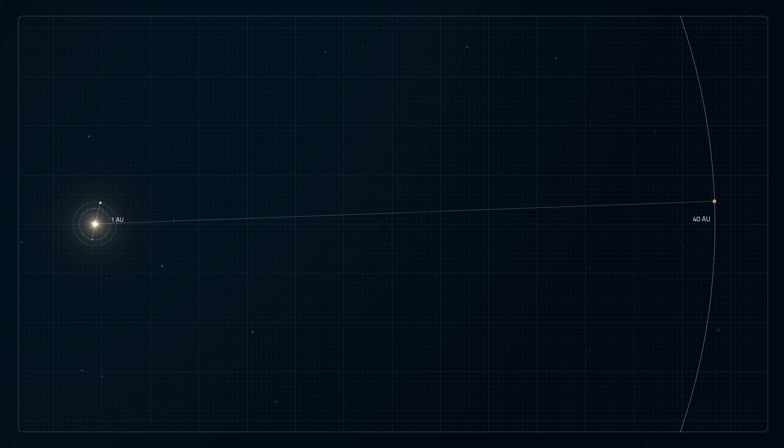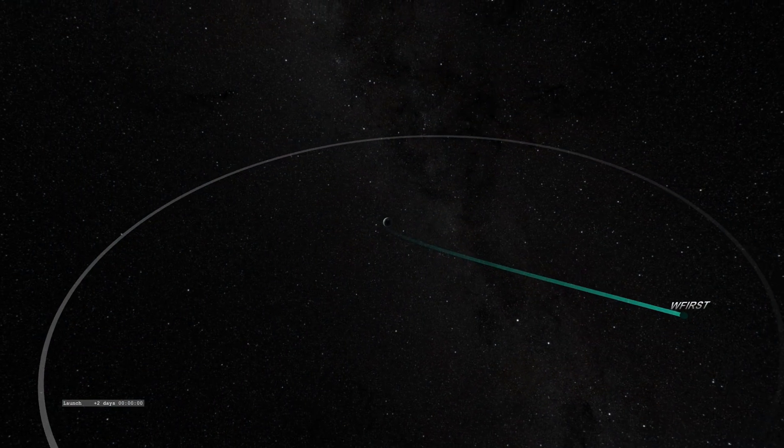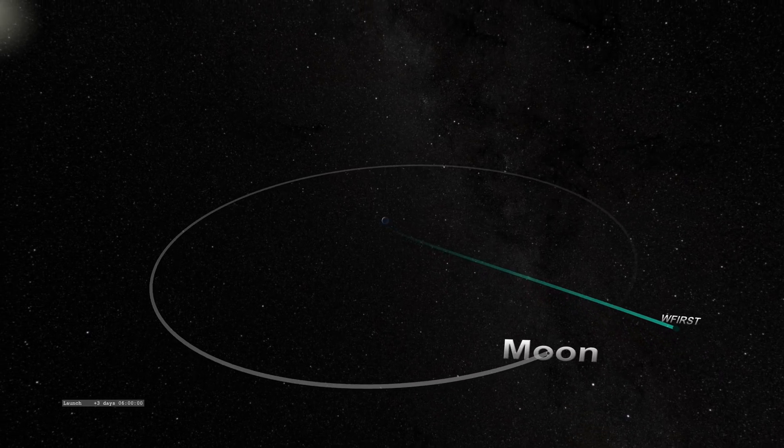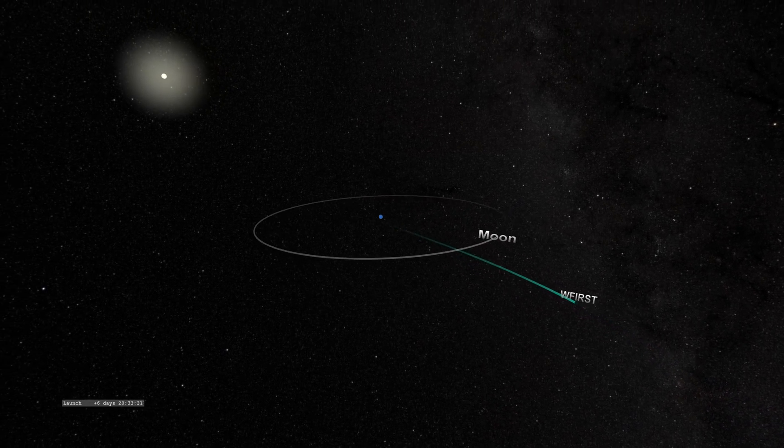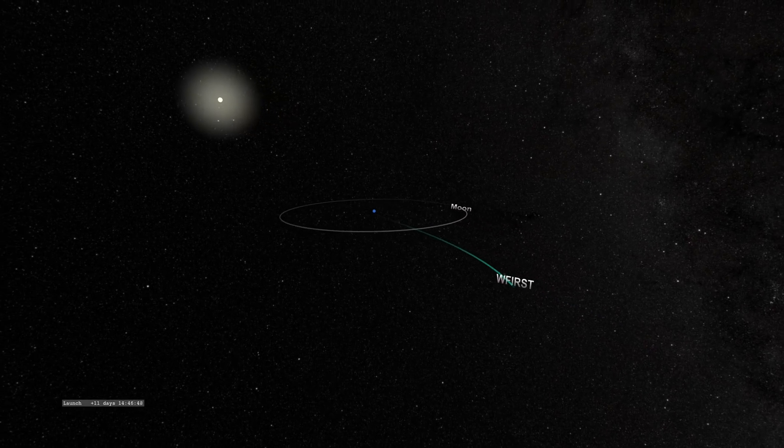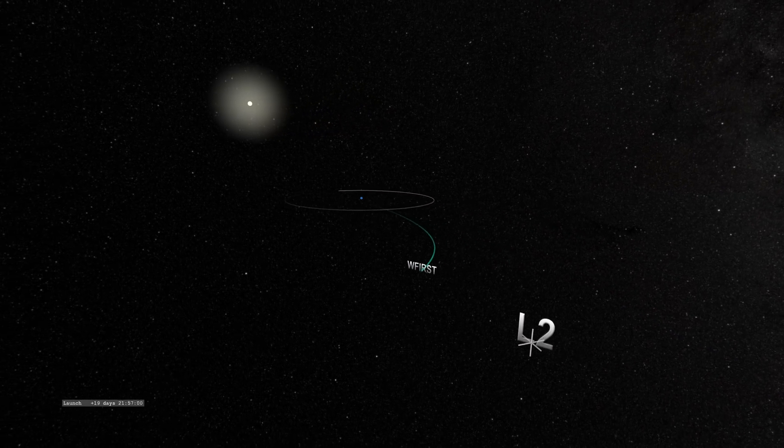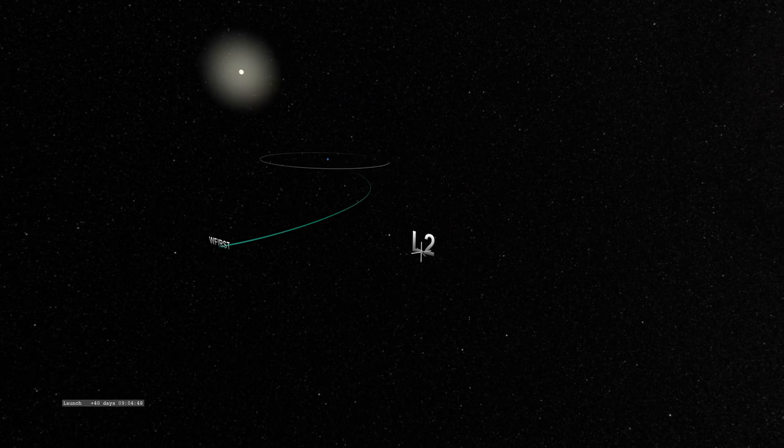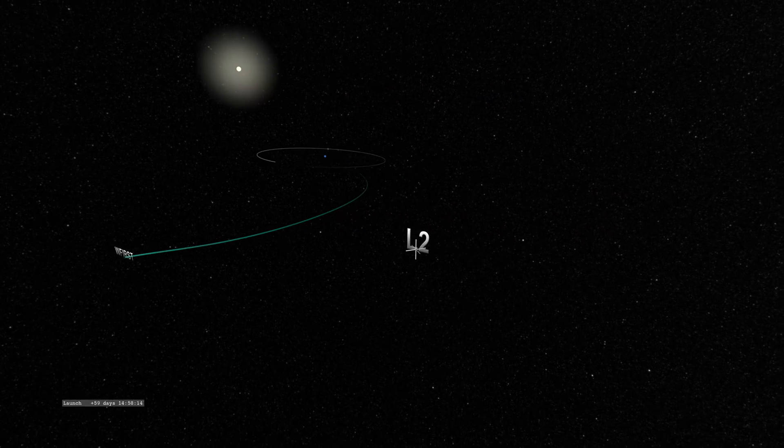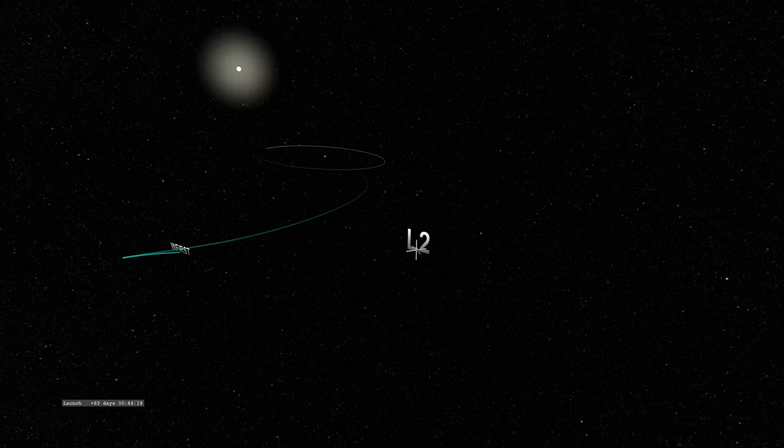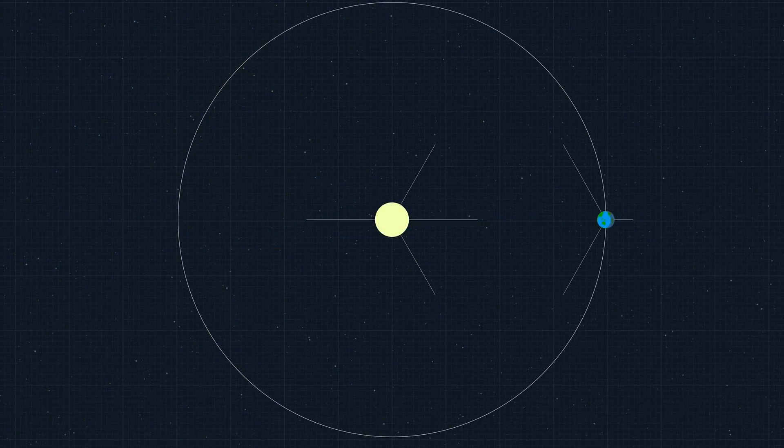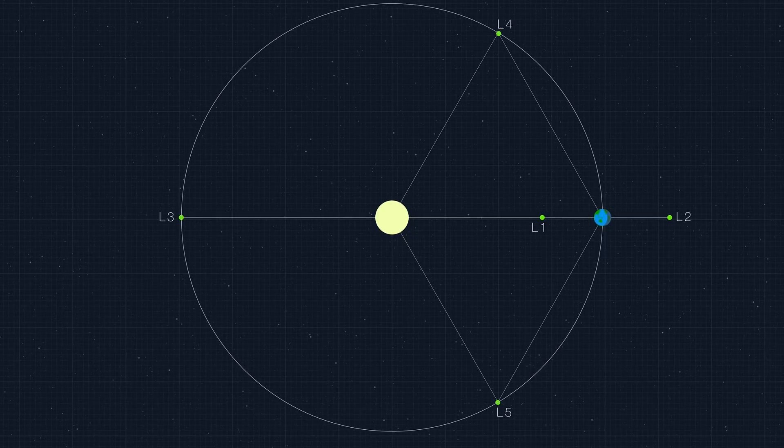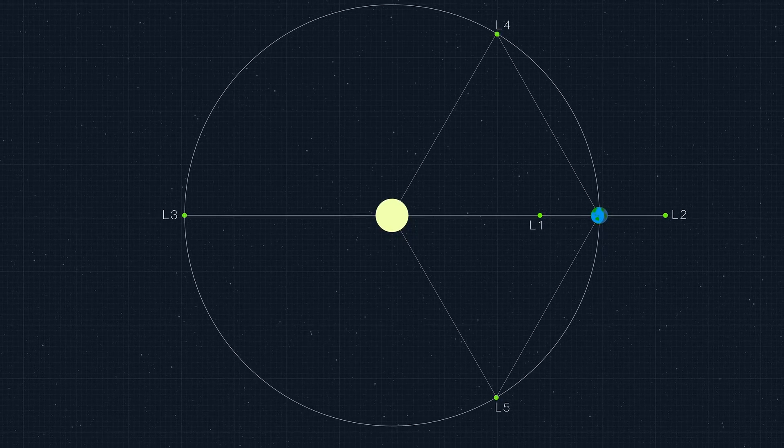In order to make all these measurements, WFIRST will move to nearly one million miles from Earth and orbit a special area of space called a Lagrange point. This particular point, called Earth-Sun L2, is one of several locations where the combined gravitational effects of the sun and Earth create a zone of stability where spacecraft can pace Earth as it orbits.